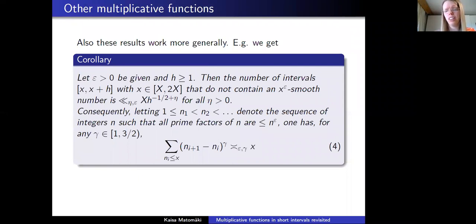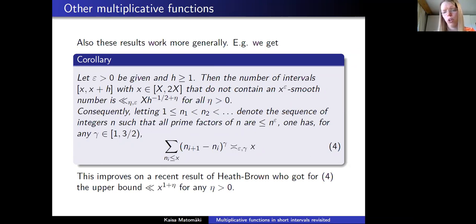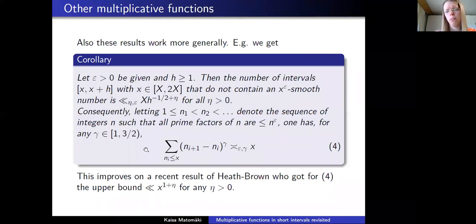These results are not restricted just to norm forms but work for other multiplicative functions. For instance, we can study gaps between x^epsilon-smooth numbers. If we look at the number of intervals from x to x + h which do not contain an x^epsilon-smooth number, the number of them is at most x · h^(-1/2+eta) for any eta. Consequently, we get the corresponding result for the gamma-th power of the gaps for gamma up to 3/2 again, improving on a recent result of Heath-Brown.